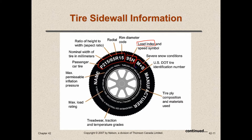Sometimes there's a mud and snow symbol that tells us about conditions the tire is good for. The DOT number has a bunch of numbers and letters — that's the US DOT tire identification number, and it tells us when the tire was made and other information like that.